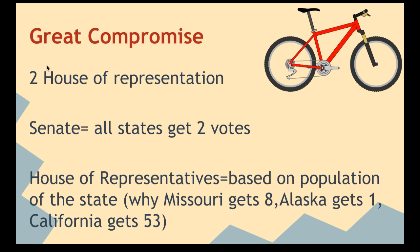However, the second house, the House of Representatives, is based on population. So those states that have a higher population get more votes than those states that don't. For example, Missouri has a higher population than Alaska, so Missouri gets eight votes and Alaska only gets one, whereas California, which has a higher population than both, gets 53.